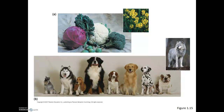The same can be true in domesticated dogs. There's a variety of different breeds ranging from Chihuahuas to Great Danes and St. Bernards and everything in between. All of these varieties came through human selective breeding of wolves, by selecting different traits or characteristics in wolves that were integrating with human societies. For instance, especially friendly wolves were bred together, and their friendliest puppies were selectively bred over generations, giving rise to very different types of organisms from the original ancestral animal.